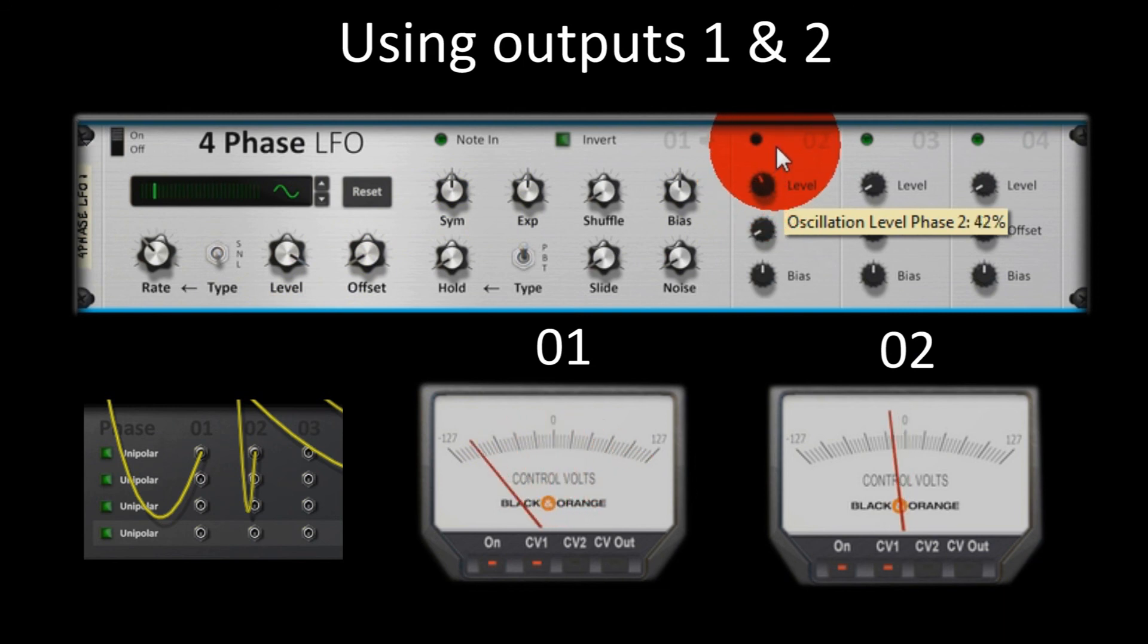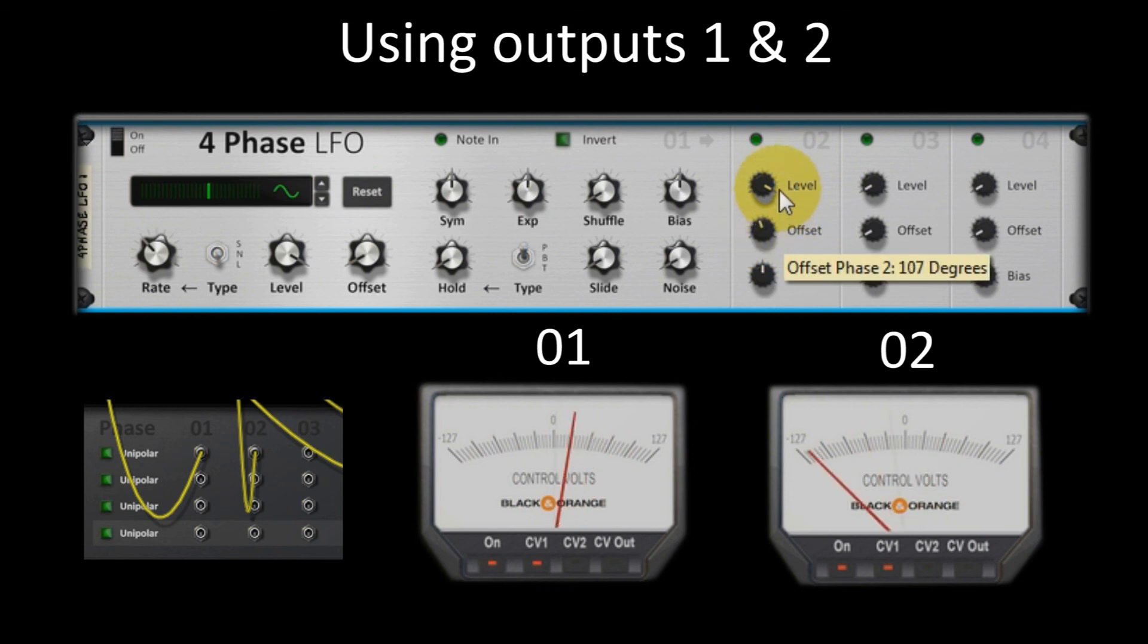Four sets of outputs are available based on the same LFO. They each have their own level, offset, and bias rotaries.